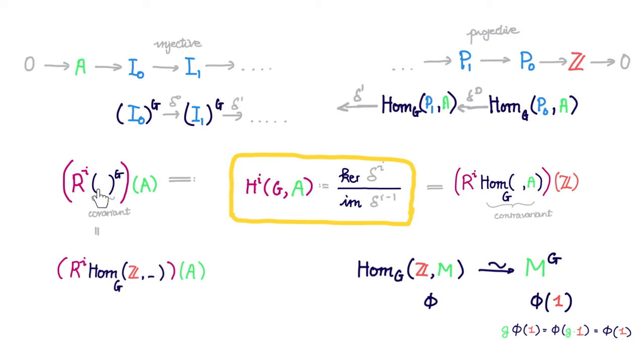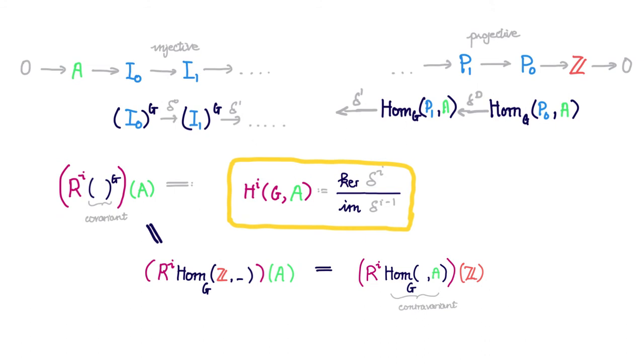Thus we see that this G invariant functor is isomorphic to this hom functor. Putting it this way, we see that now our previous claim is much more symmetric.